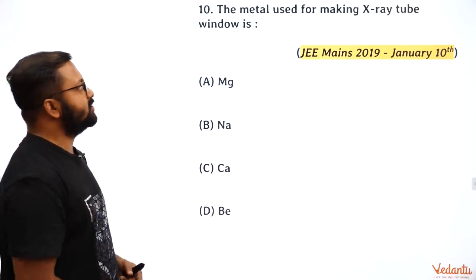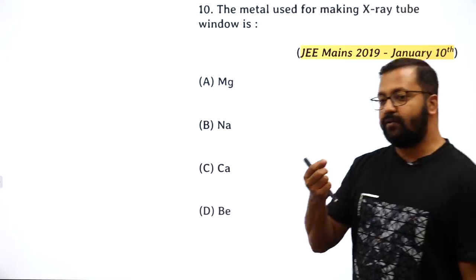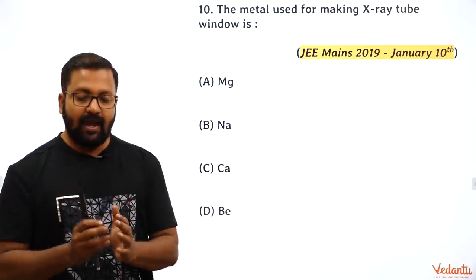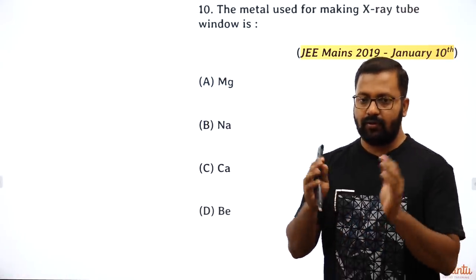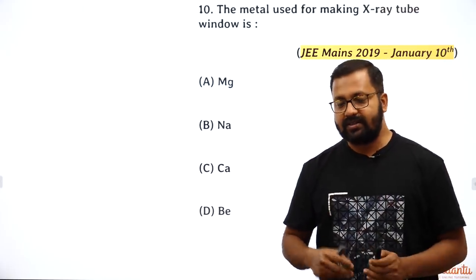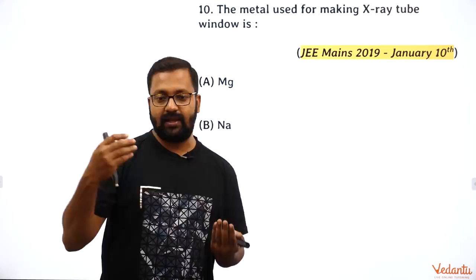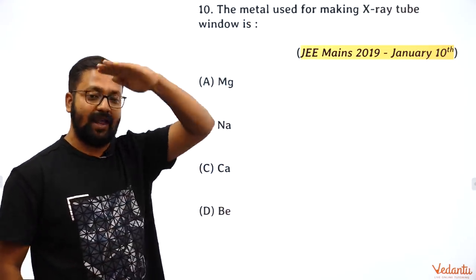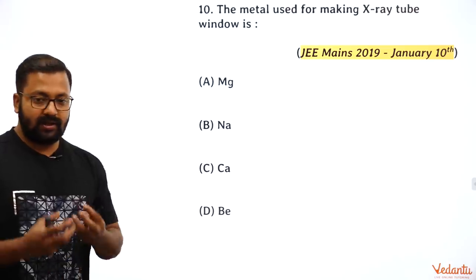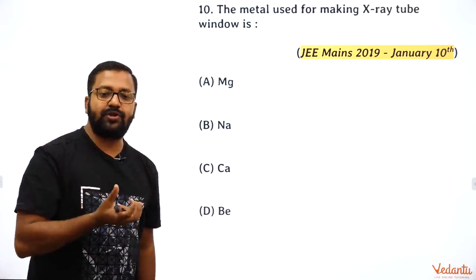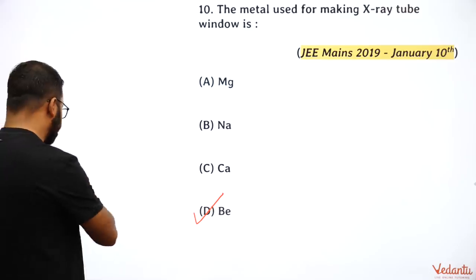The metal used for coating X-ray windows: it's not blocking X-rays but allowing them to pass through. If the atomic size is large, X-ray absorption is greater — we want minimal absorption. Therefore the element with the smallest atomic size is needed. The answer is beryllium — it has the smallest atomic size among the options and thus least X-ray absorption.